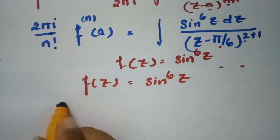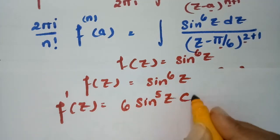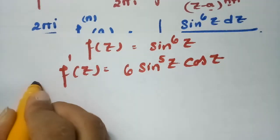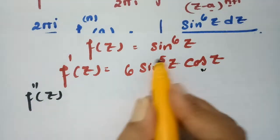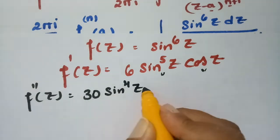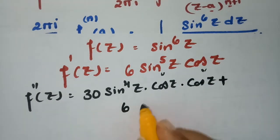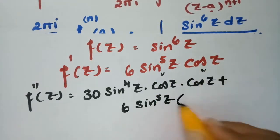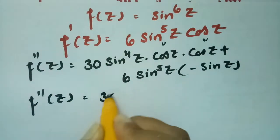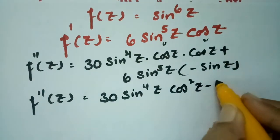Now f(z) = sin⁶z. The first derivative is 6 sin⁵z cos z. For the second derivative, applying the product rule: the derivative of 6 sin⁵z gives 30 sin⁴z cos z, and the derivative of cos z gives minus sin z. So f''(z) = 30 sin⁴z cos²z minus 6 sin⁶z.